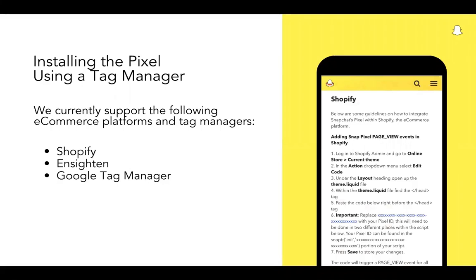If your website is powered by Shopify or if you're using tag managers like Insighton or Google Tag Manager, we have supported integrations and installation guides for these platforms. To find these installation guides, please check our Business Help Center at businesshelp.snapchat.com and search for the SnapPixel. If you check the chat window of the webinar right now, we will copy in direct links to these articles. While we currently do not have fully supported integrations with other tag management systems not mentioned here, the pixel should work correctly if embedded inside any tag manager.